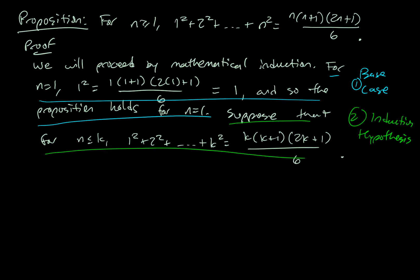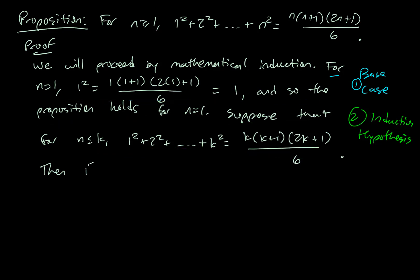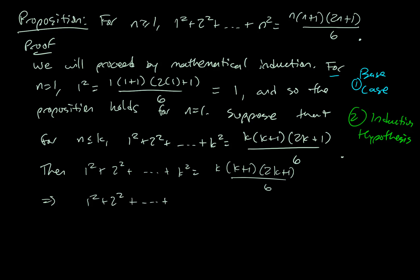We get the kth iteration for free; we need to show it implies the k plus 1 instance. We go from the kth instance to the k plus 1 one by starting with that kth formula. With these series questions, all I need to do is add the next term into the series. I take my formula from the kth iteration and just add k plus 1 squared to it.